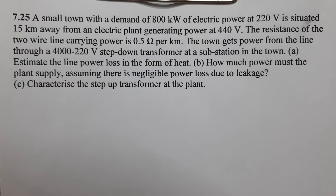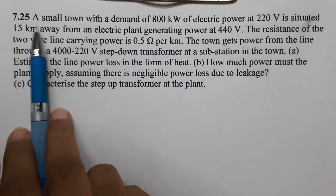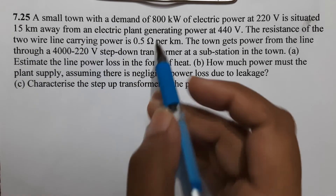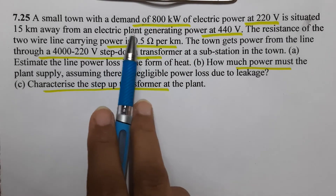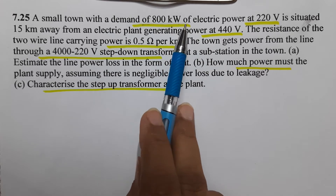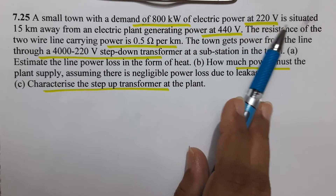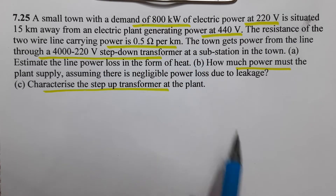In the continuation of Chapter 7 on alternating currents, today I am going to take questions 7.25 and 7.26. This question is very important for understanding the concept of transformers and also from the CBSC exam point of view. The problem: a small town with a demand of 800 kilowatt of electric power at 220 volt is situated 15 kilometers away from the electric plant generating power at 440 volt.